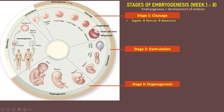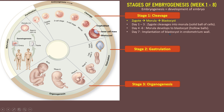In stage 1, cleavage: the zygote develops to morula and into blastocyst. Day 1 to 3, the zygote cleaves into morula, a solid ball of cells. Day 4 to 6, morula develops into blastocyst, a hollow ball. Day 7, implantation of the blastocyst in the endometrium occurs.